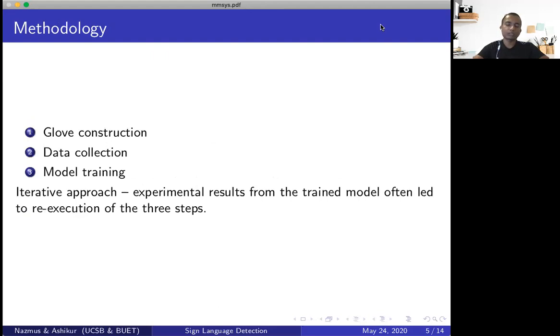So our whole methodology can be divided into three distinct steps. First of all, glove construction. Once the glove is constructed, we move on to data collection. And finally, once we have the data, we move on to the model training phase. And this is an iterative approach, meaning that sometimes depending on the result, we have to perform the three steps again to make necessary modifications.